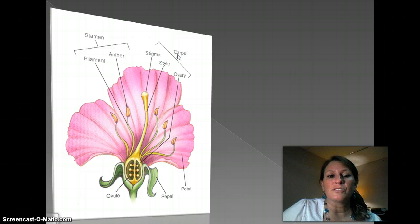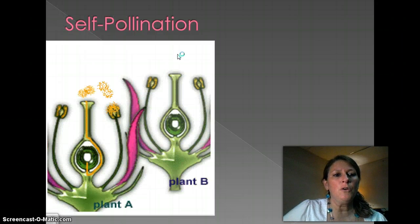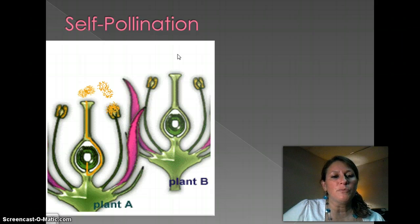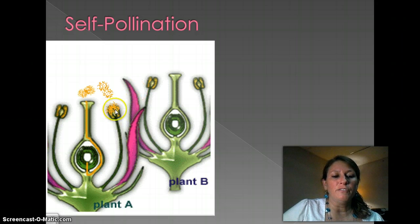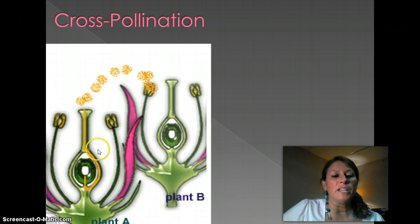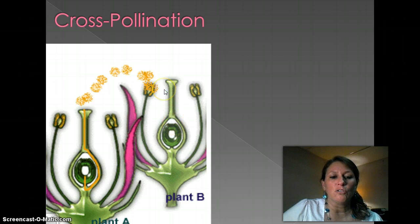A silly way to remember it: soccer mom's carpool — carpel. Two types of pollination: self and cross. Self-pollination is within the same plant — the pollen from one anther falls down the stigma to the ovules. Cross-pollination is between two plants. Scientists will often hand cross-pollinate two flowers to get a hybrid or a new type of flower.